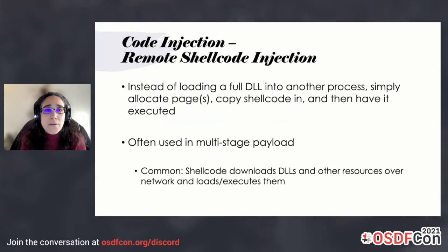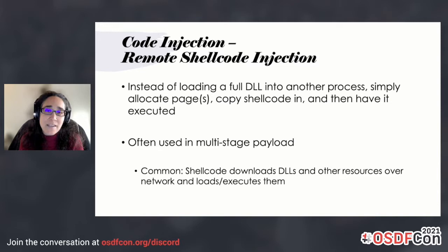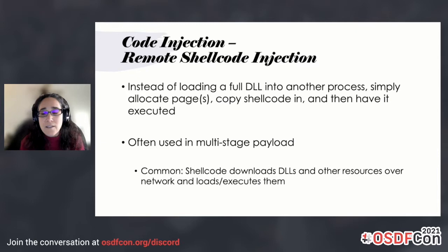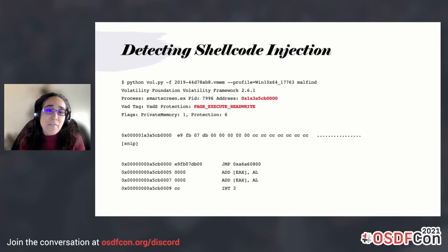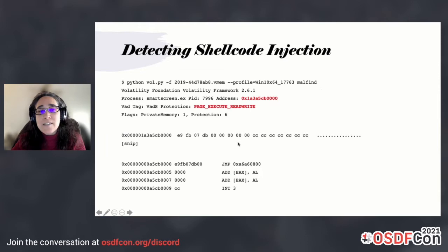Looking at code injection, we're going to look at shellcode injection first. This is where a malicious process loads a piece of shellcode within a target process's address space. It doesn't load the full DLL — it's basically assembly language that can be a multistage payload that downloads other DLLs and resources and executes them. In memory, this stands out pretty obviously. We can see page permissions of page execute, read, write. If we're running the Malfind plugin, we can get a view of the code, and if it's valid disassembly, we'll see that in the view as well.